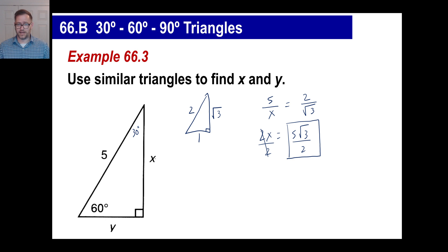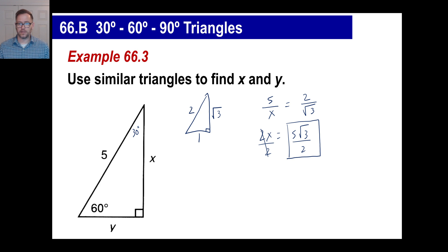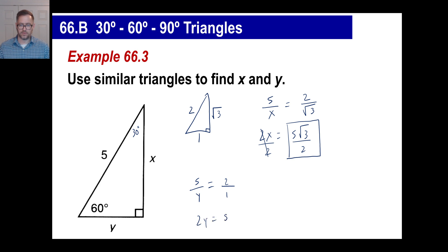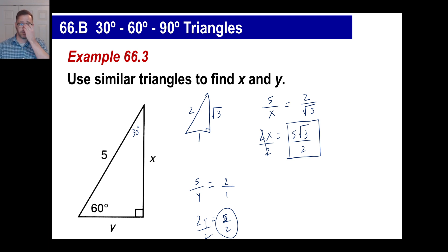To find Y, you could use the Pythagorean theorem or the ratio. You know the side across from the 90-degree angle is twice the side across from the 30-degree angle, so 5 is twice Y, meaning Y is 5 halves. Or doing the ratio: 5 is to Y as 2 is to 1, so 2 times Y equals 5, and Y equals 5 over 2.